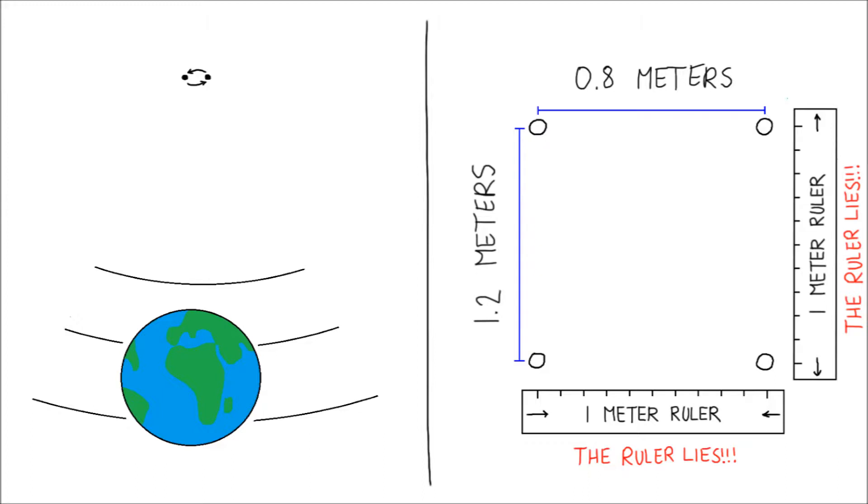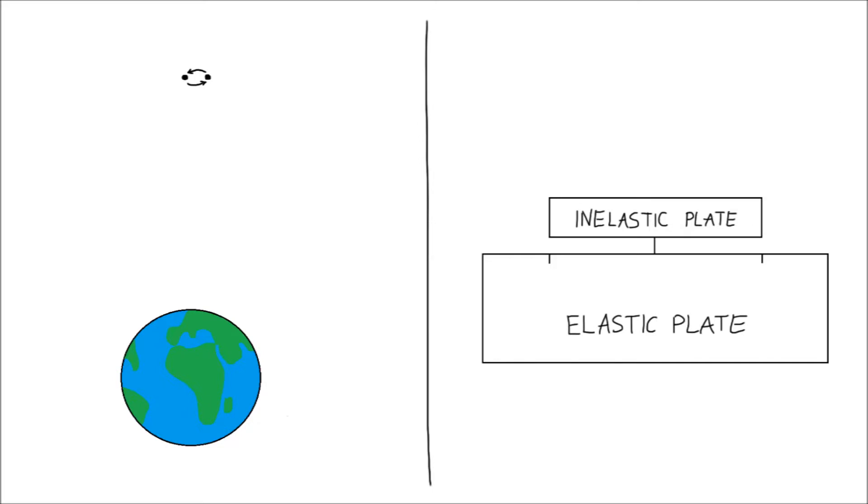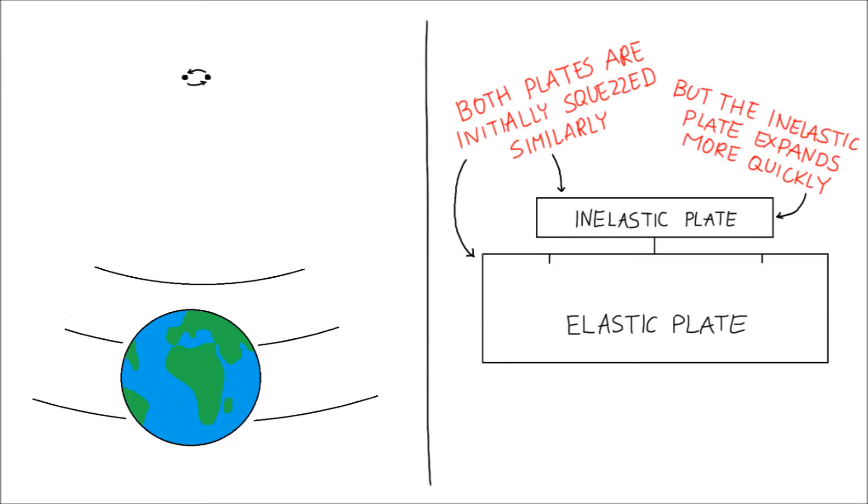In principle, you could detect a passing gravitational wave by attaching a piece of inelastic material to a larger piece of elastic material. A passing gravitational wave would squeeze both of them, but the piece of inelastic material would more quickly return to its original shape, moving relatively to the elastic material.